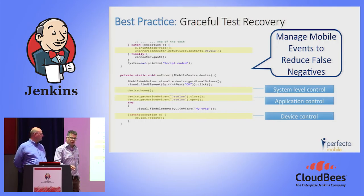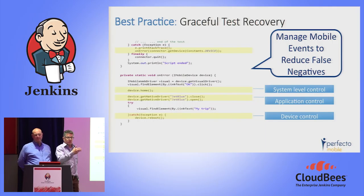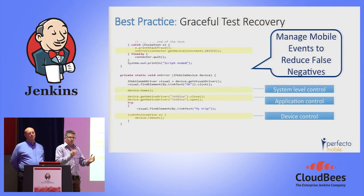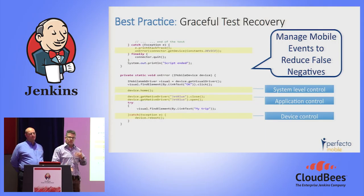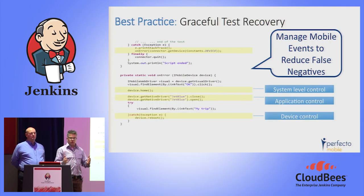Especially with CI and test automation on mobile, having a baseline for your mobile device before you start the test and after you end the test is critical to the next iteration or test scenario. Going back to the home screen after covering a test area, and rebooting the device at the end of the entire test execution, cleans the memory and many other things accumulated on the device — giving you a controlled environment and eliminating errors common in mobile.